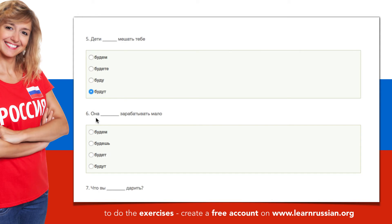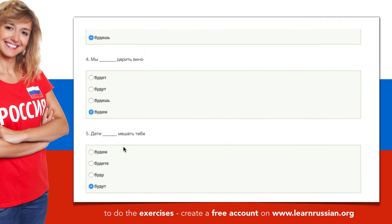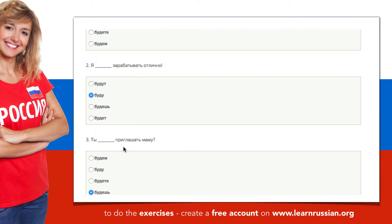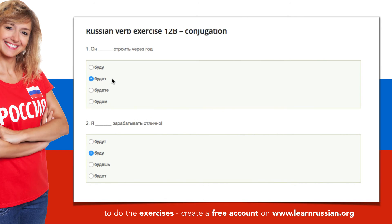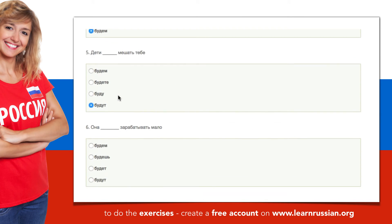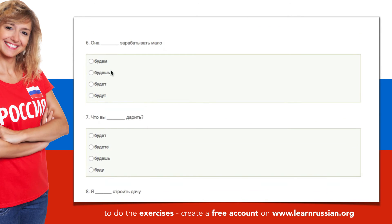The next one. Она — she. Зарабатывать — to earn. Мало — a little. The options are: будем, будешь, будет, будут. Она takes the same ending as он, so будет. Она будет зарабатывать мало. She will earn a little.